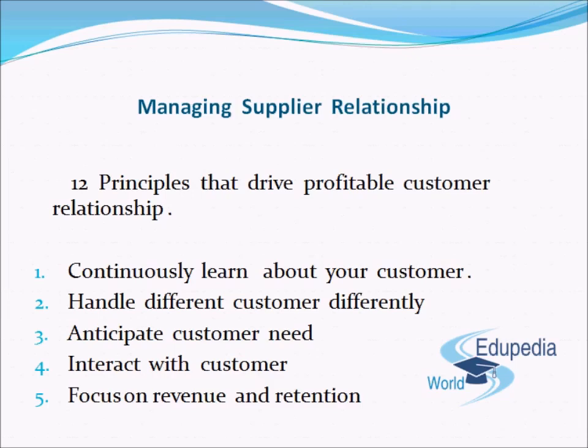The next principle is handling different customers differently. Understanding how to handle different customers in different ways makes service much more efficient. The third principle is the anticipation of the customer's need, which is a basic requirement for effective customer relationship management. If this anticipation is correct, the supply chain relationship being built is much more stable; if not, the supply chain built up is not appropriate.